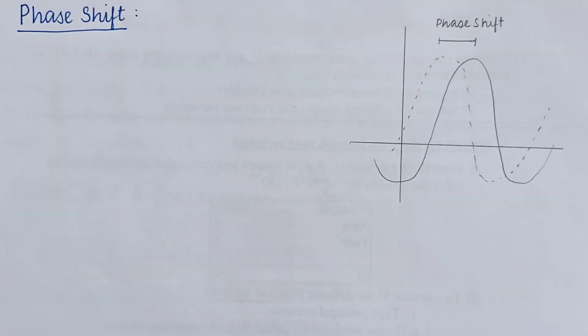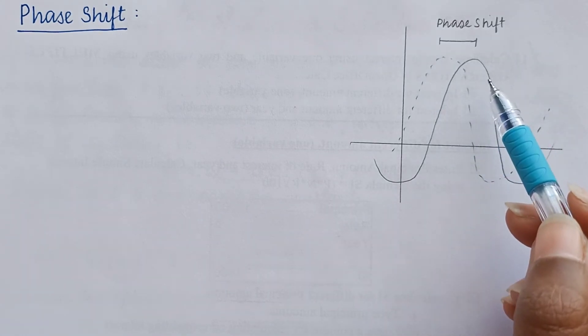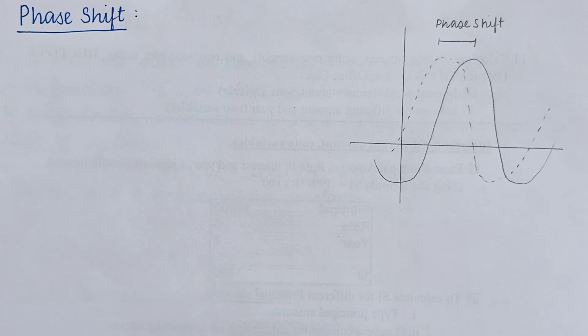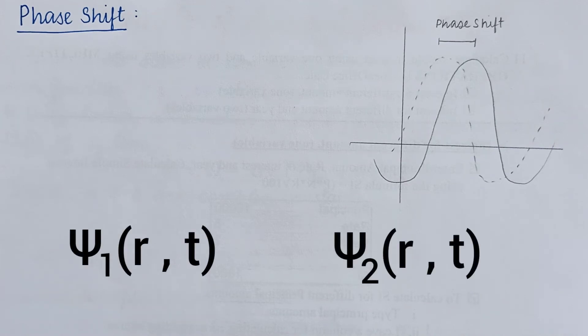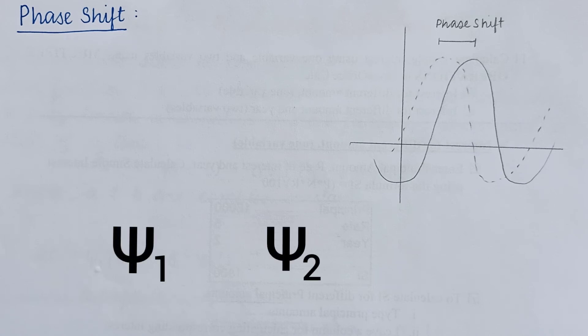This additional complex conjugate term gives rise to the interference pattern for the electron, which is similar to that of light waves. A new term comes in, and that is phase shift — the shifting of the graph from its usual position. Due to the phase shift between ψ₁(r,t) and ψ₂(r,t), the interference pattern takes place. Surprisingly, we can measure this phase shift from the interference pattern, but we cannot measure the phases of ψ₁ and ψ₂ separately.